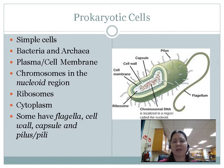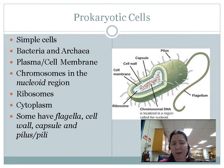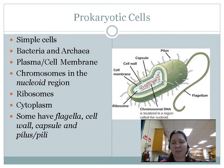Prokaryotic cells are simple cells. They fall into the class of bacteria or archaea. They still have a plasma and cell membrane because every single cell has a cell membrane. And then instead of a nucleus, they have what's called a nucleoid, and that's where their chromosome is. They also have ribosomes and cytoplasm.